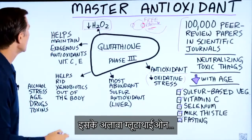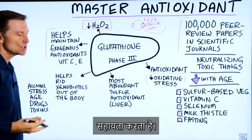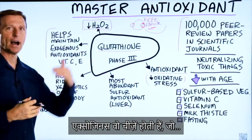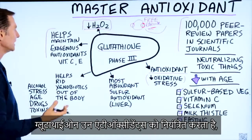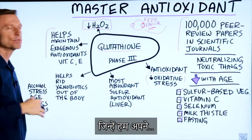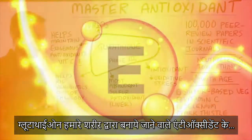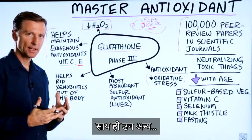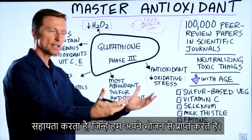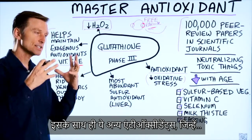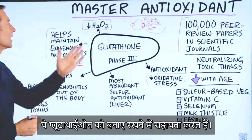Glutathione also helps maintain something called exogenous antioxidants — those things that come from outside the body. So glutathione will help maintain antioxidants that come from the diet, like vitamin C and vitamin E. And conversely, those other antioxidants we get from the diet can also help maintain glutathione.